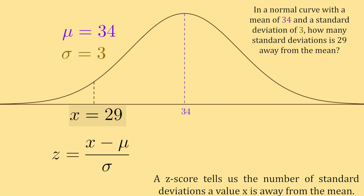Well, if I plug 29 in for x, 34 in for our mean, and 3 in for the standard deviation, we get z equals 29 minus 34 all over 3, which is equal to negative 5 divided by 3, which equals negative 1.67.